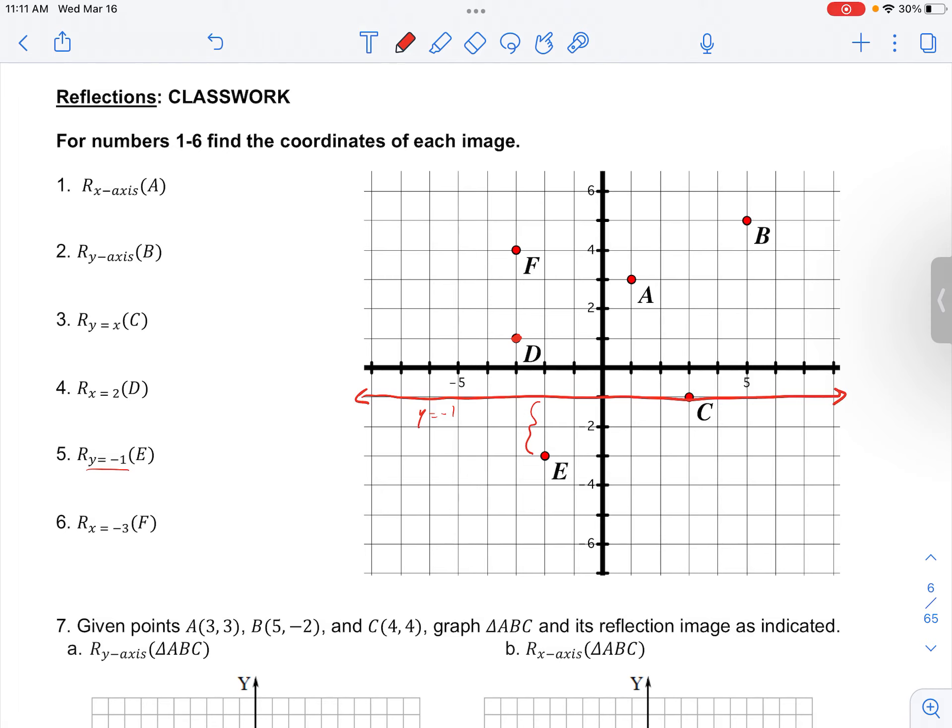So when we reflect it, we want to keep the same X value, or the X coordinate, so it's going to be negative 2.